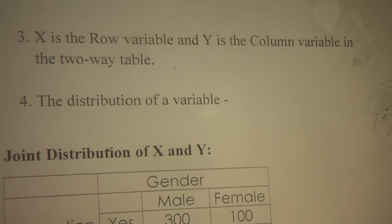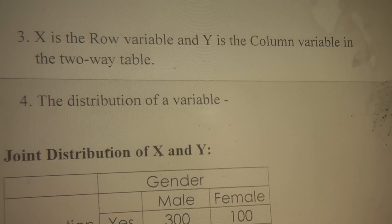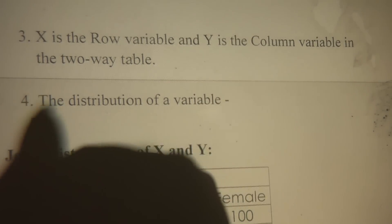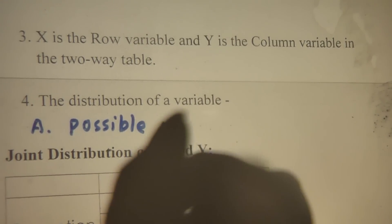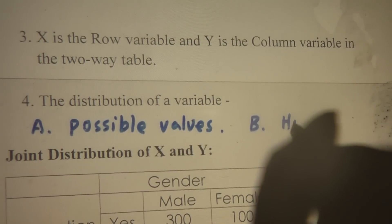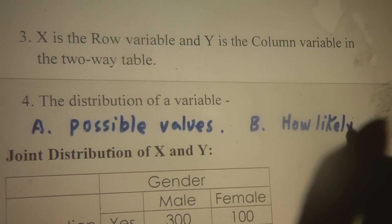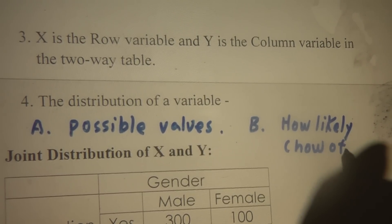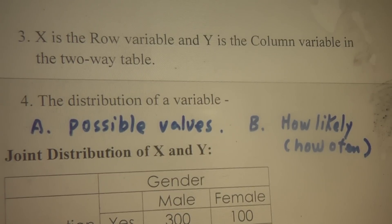And the distribution of the variable — when we say distribution of the variable, two pieces of information need to be well specified. A: what are the possible values? And B: how likely, or how often, do we see that? When we say distribution of the variable, we need to tell people how likely or how often we see it.